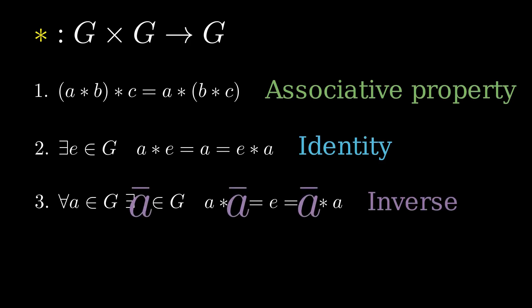Third rule, the inverse. Every element A has a twin, called A inverse. Now, if a set has a binary operation that satisfies all three of these properties, then congratulations, we've got a group.